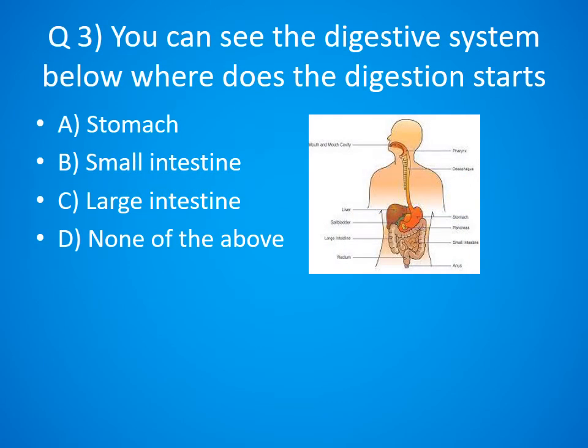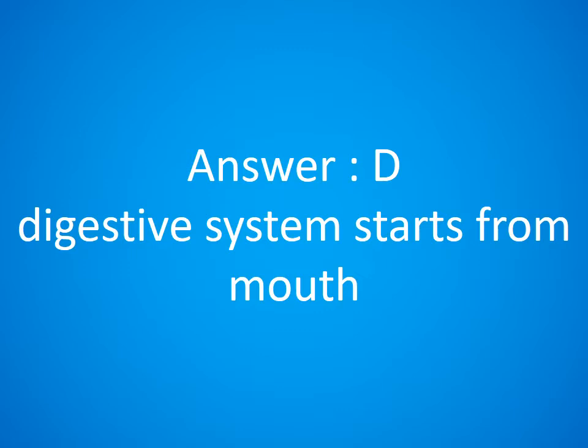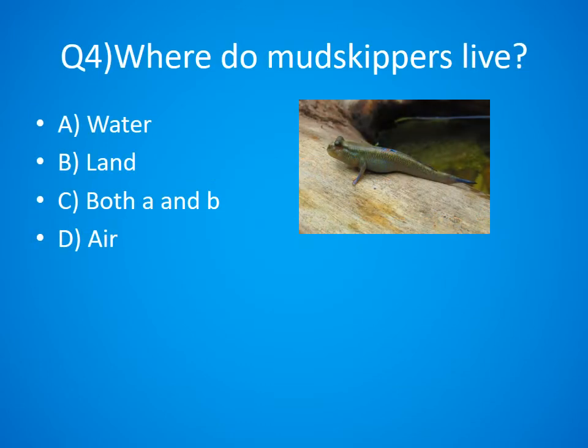Question 3. You can see the digestive system below. Where does digestion start? Option A. Stomach, B. Small intestine, C. Large intestine, D. None of the above. The answer is Option D. None of these — the digestive system starts from the mouth.